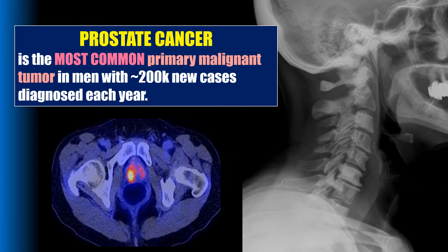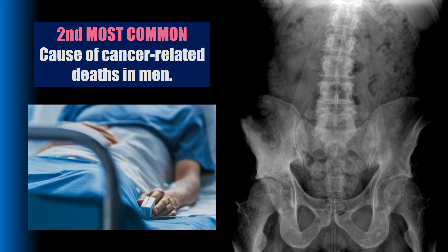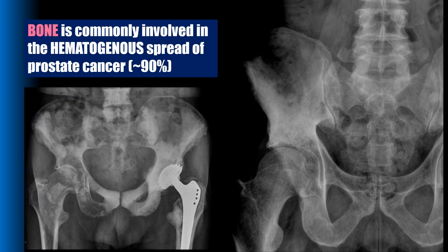Prostate cancer is the most common primary malignant tumor in men, with approximately 200,000 new cases diagnosed each year, and it is the second most common cause of cancer-related deaths in men. Bone is commonly involved in the hematogenous spread of prostate cancer — approximately 90% of the time it's going to go to bone, and that's where X-ray and other diagnostic imaging plays a role.